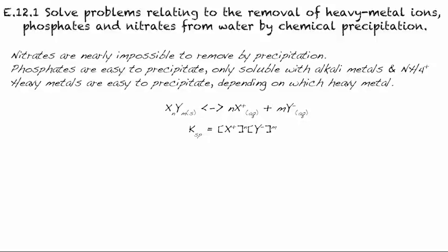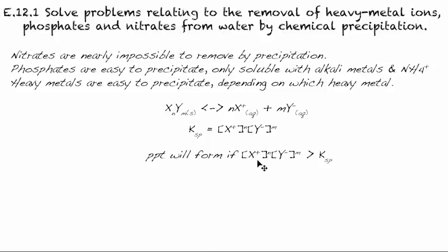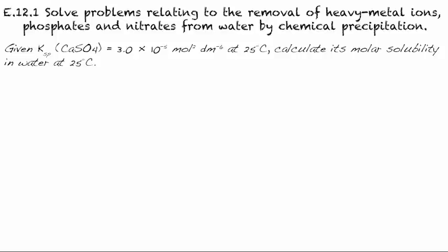It's still products over reactants. If we look at this value of Ksp, a precipitate will form if our solubility product — the product of the ion concentrations — is greater than Ksp. For example, given the Ksp of calcium sulfate is 3.0 × 10⁻⁵ at 25°C, we can calculate its molar solubility in water. Note that Ksp values are specific to a certain temperature, so solubility changes with temperature.